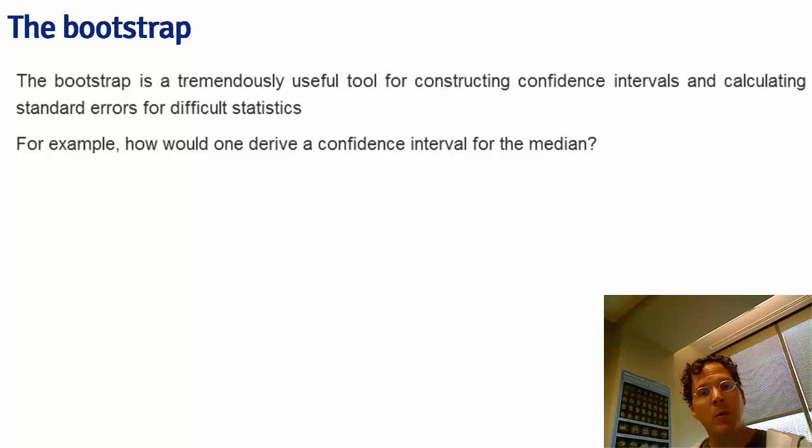Just as a simple example, if you wanted to do a confidence interval for the median, there are some kind of complicated asymptotics that you can appeal to, but it involves a lot of mathematics. On the other hand, you can just perform a bootstrap, and it gives you a confidence interval for the median without having to do all of that work.